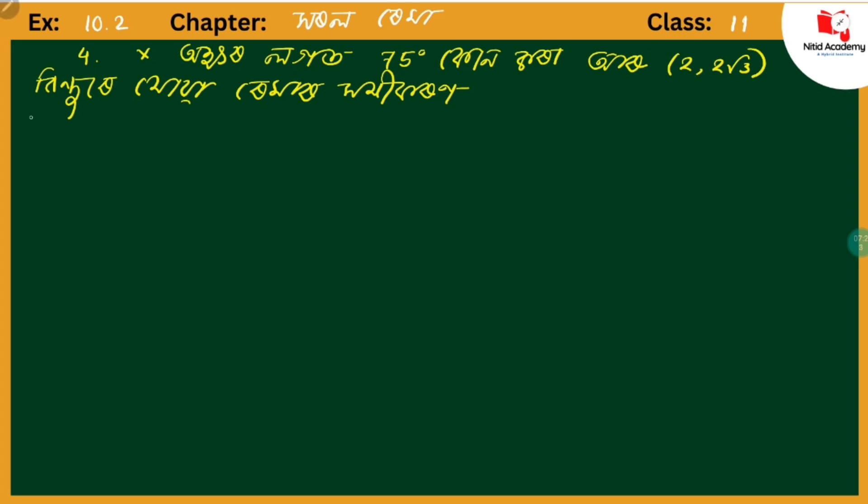The solution: The given values are x₁ = 2 and y₁ = 2√3. We are given that m is equal to tan 75 degrees.